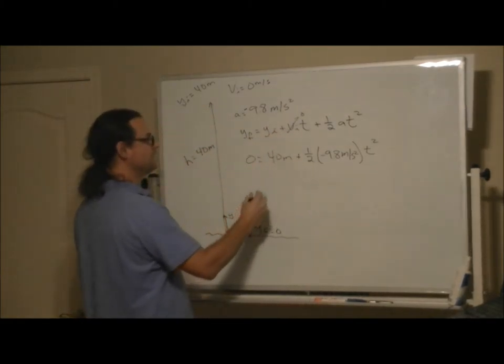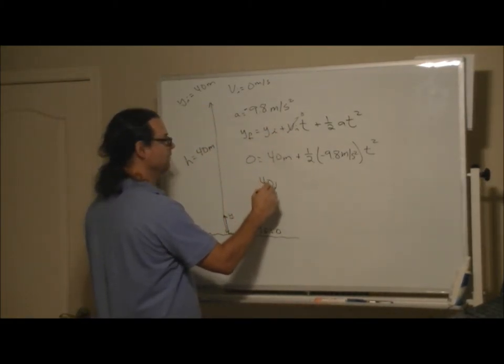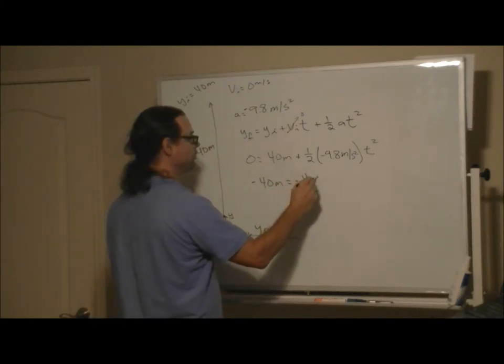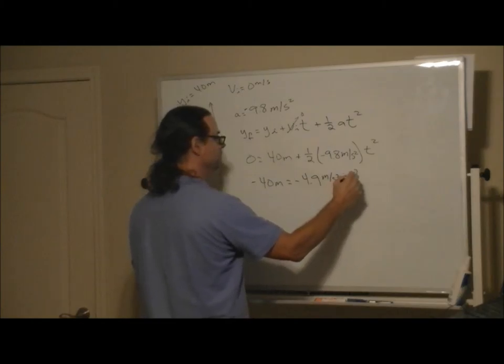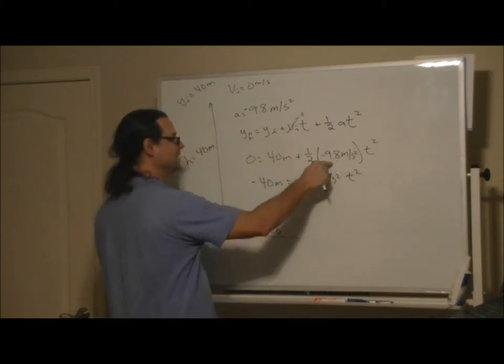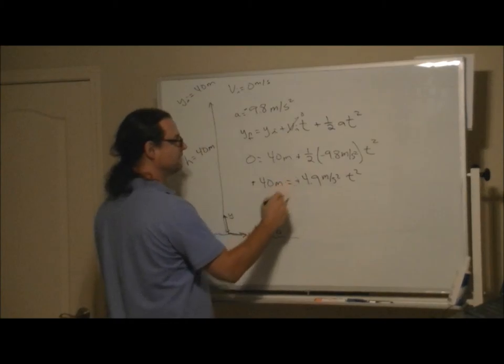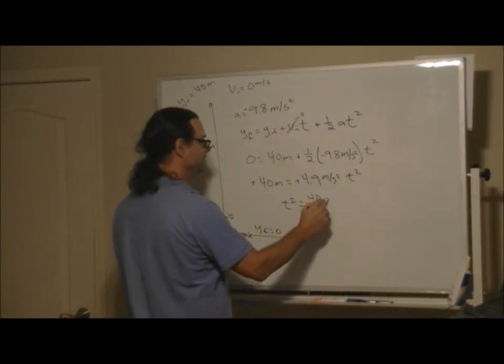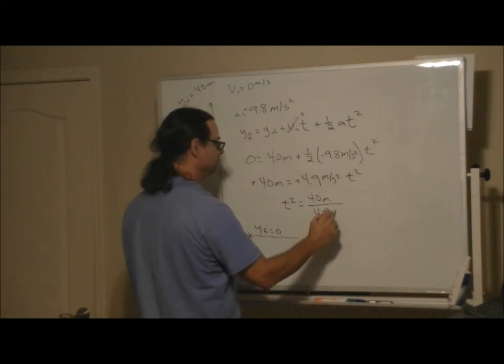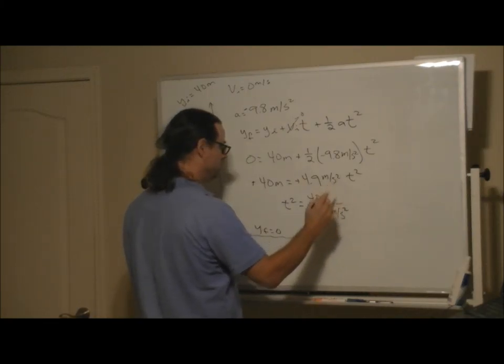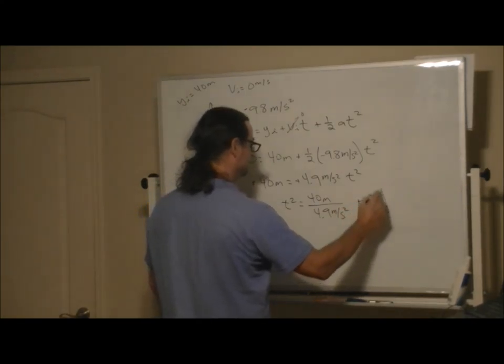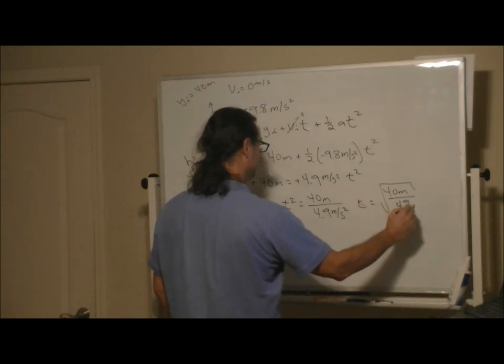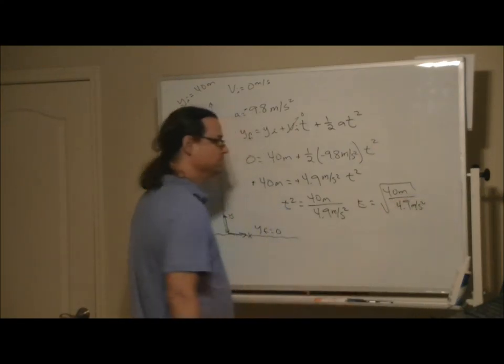So a little bit of algebra here, 40 meters to the left-hand side equals minus 4.9 meters per second squared T squared. 4.9 is 9.8 divided by 2. Cancel out the negative signs, T squared equals 40 meters divided by 4.9 meters per second squared. T is equal to the square root of 40 meters divided by 4.9 meters per second squared.